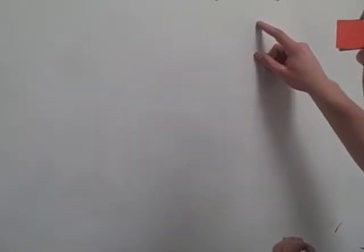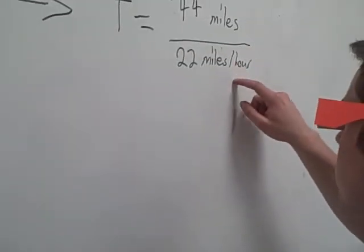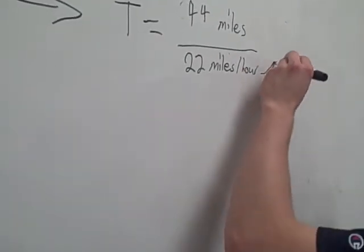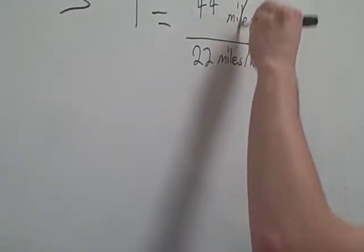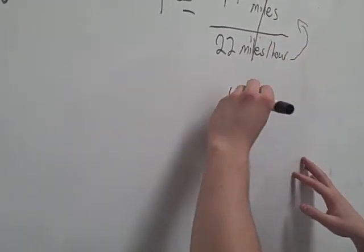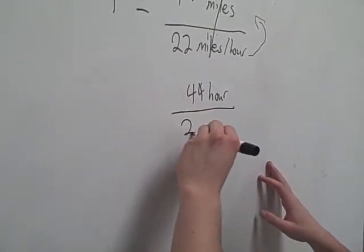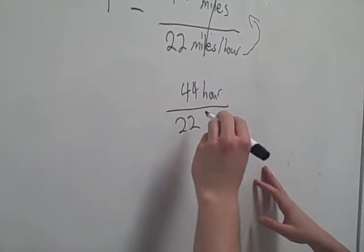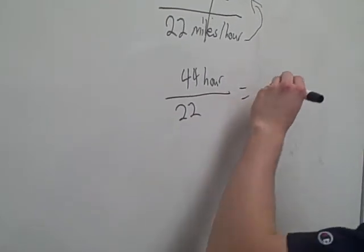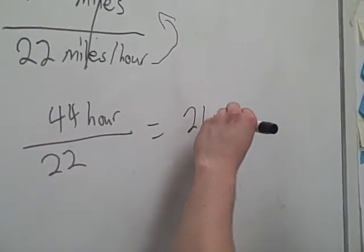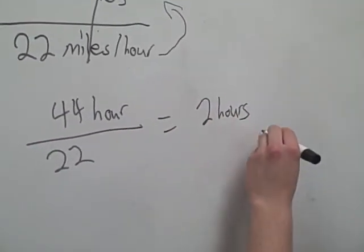Since this is in the denominator, as underneath it, this moves up, and this cancels out. So you have 44 per hour divided by 22. And then you simplify that to equal 2 hours. And that's how long it takes a bicyclist to go 44 miles if they're biking 22 miles per hour.